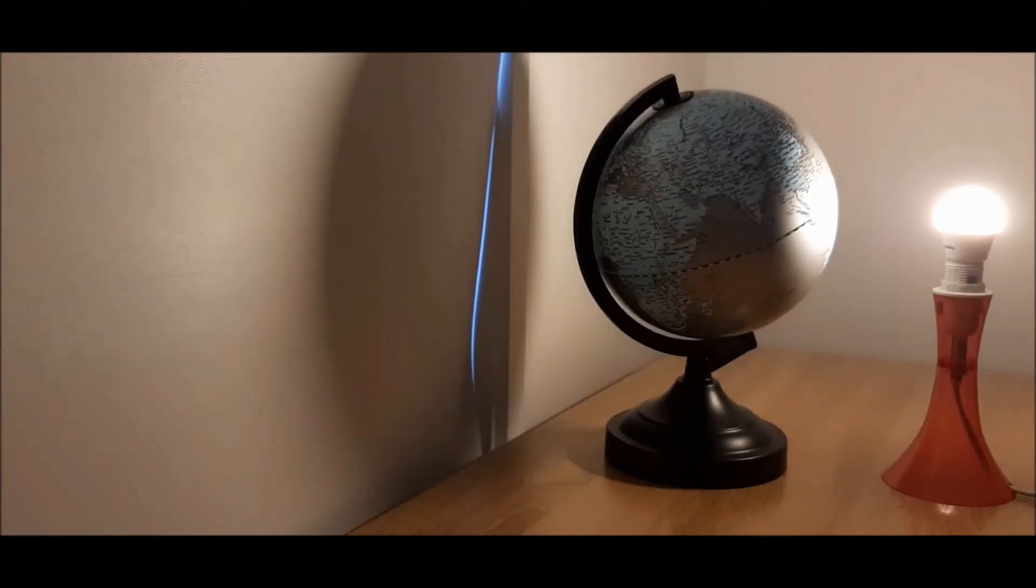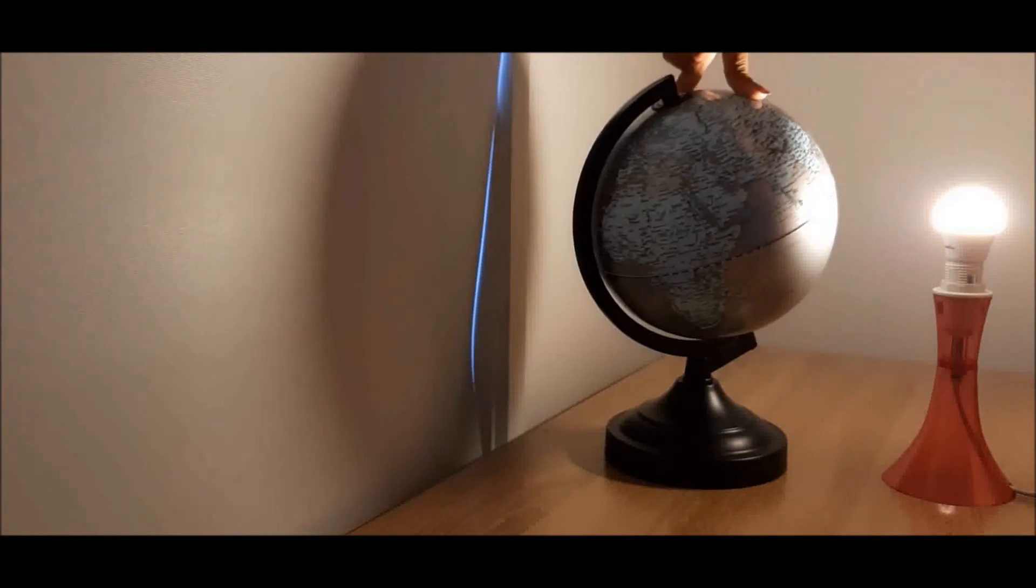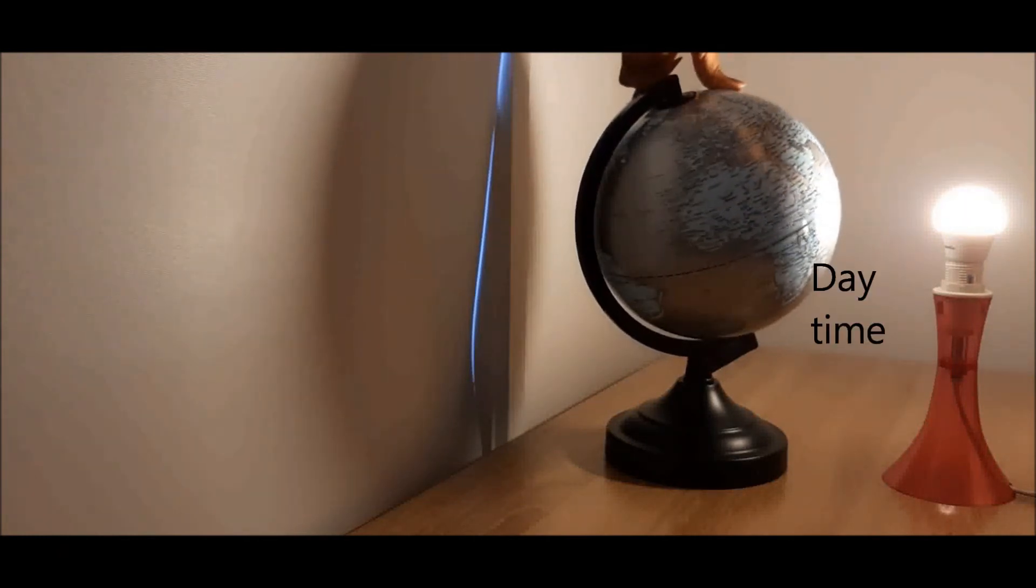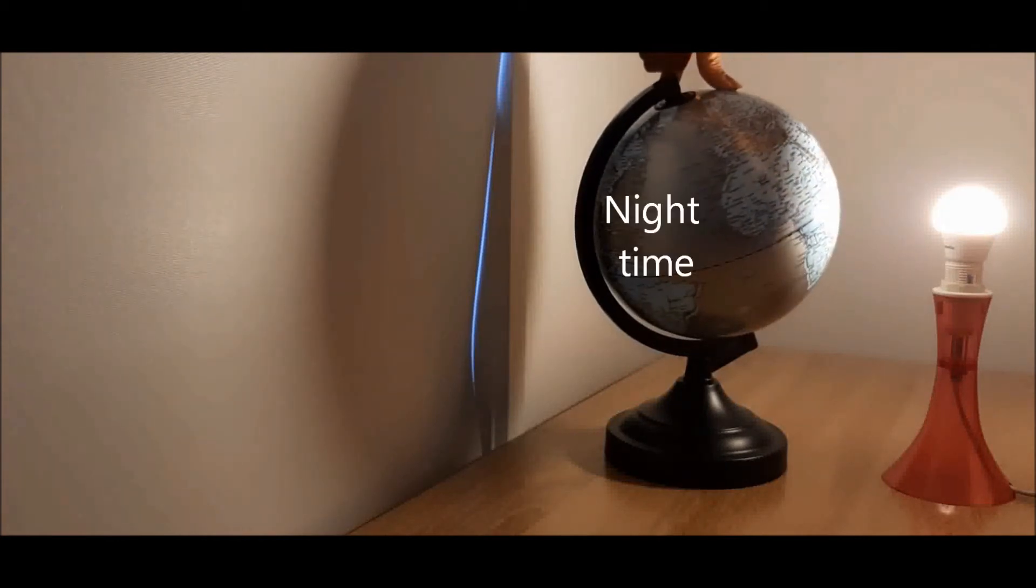Look at this model. The globe represents planet Earth and the bulb represents the Sun. You can see the side of the globe facing the bulb is lit. Similarly, the side of Earth that faces the Sun gets daytime, while the side away from the Sun gets nighttime.